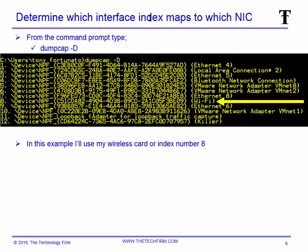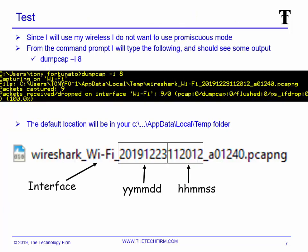Step 1: determine which interface index maps to what NIC. From the command prompt, type 'dumpcap -D' (capital D) and you'll see a list. In my case I have 12 adapters including Wi-Fi, Ethernet, Bluetooth, and a bunch of virtual interfaces. There's going to be a host of things you may or may not see on your screen — just pay attention to the one you want to use. In my case it's number 8, which is Wi-Fi. Please don't just type 8, because you may not have an interface at index 8.